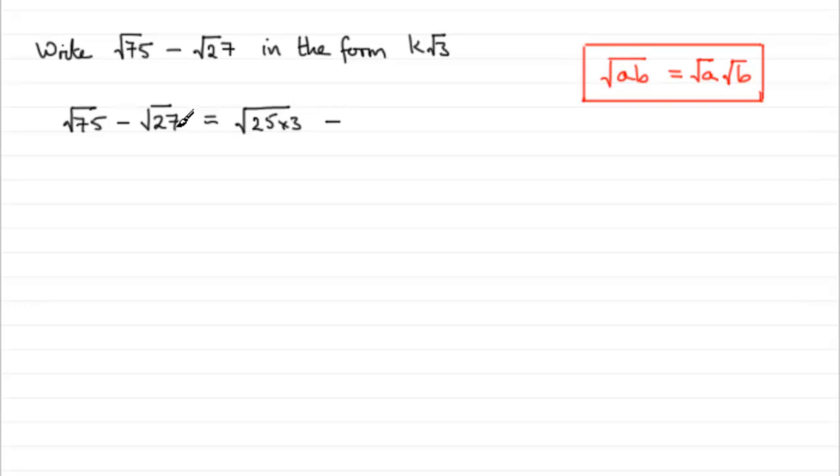And then for root 27, 3 goes into 27 nine times. So this is going to be the same as the square root of 9 times 3.